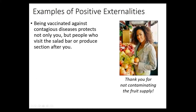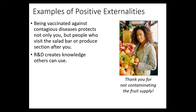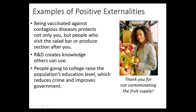Examples of positive externalities: herd immunity eliminates certain diseases so we're not as susceptible — as everybody gets vaccinated, it helps out everybody. Research and development is another example: one company develops something, and it's readily used by others. Apple has created a lot of things that other companies have benefited from — it's a positive externality; they didn't pay Apple for that benefit.